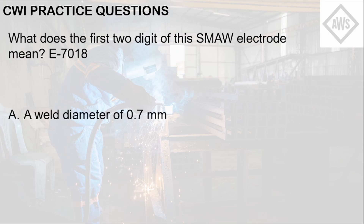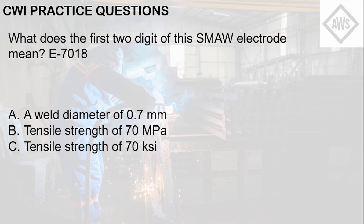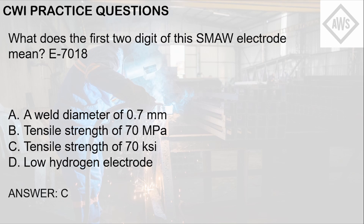The answer here is letter C. The first two digits of this SMAW electrode are the number 70. The first two to three digits of a SMAW electrode designation commonly pertain to the tensile strength of the electrode, measured in ksi — that is, 1,000 pounds per square inch. So the answer is letter C: tensile strength of 70 ksi.